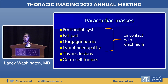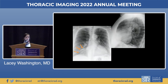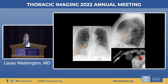Masses in contact with the diaphragm include pericardial cysts, large fat pads, Morgagni hernias, and lymphadenopathy. Thymic lesions and germ cell tumors generally aren't in contact with the diaphragm, though there will be exceptions. Confirmed on the lateral as a very anteriorly located mass, on CT this is a completely water-attenuation mass with an imperceptible wall — classic pericardial cyst.